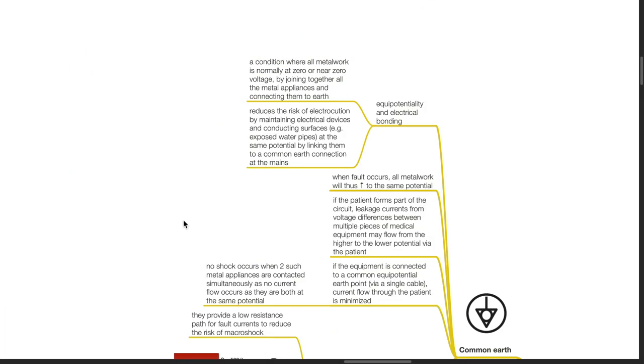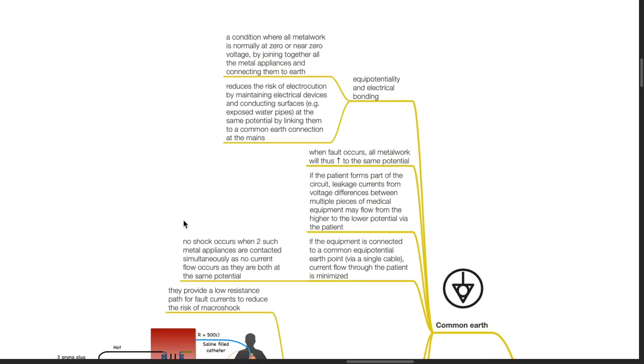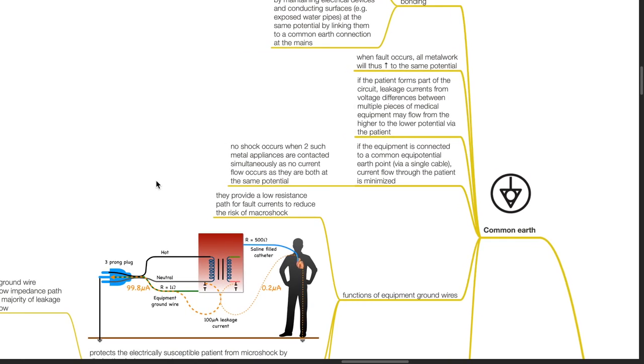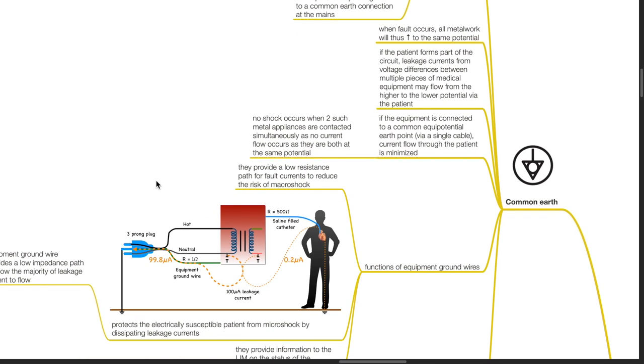Common earth. Equipotentiality and electrical bonding is a condition where all metalwork is normally at zero or near zero voltage by joining together all metal appliances and connecting them to earth. This reduces the risk of electrocution by maintaining electrical devices and conducting surfaces such as exposed water pipes at the same potential by linking them to a common earth connection at the mains. When fault occurs, all metalwork will increase to the same potential. If the patient forms part of the circuit, leakage currents from voltage differences between multiple pieces of medical equipment may flow via the patient. If the equipment is connected to a common equipotential earth point via a single cable, current flow through the patient is minimized. No shock occurs when two such metal appliances are contacted simultaneously as no current flow occurs since they are at the same potential.